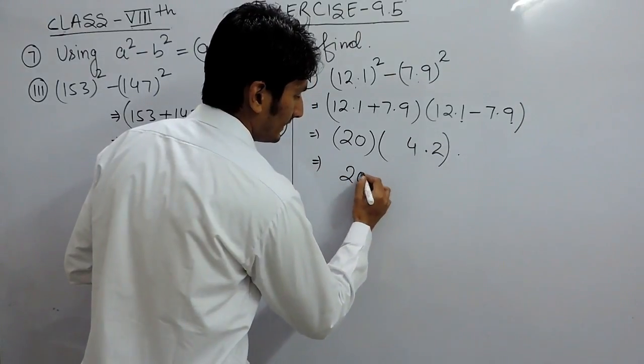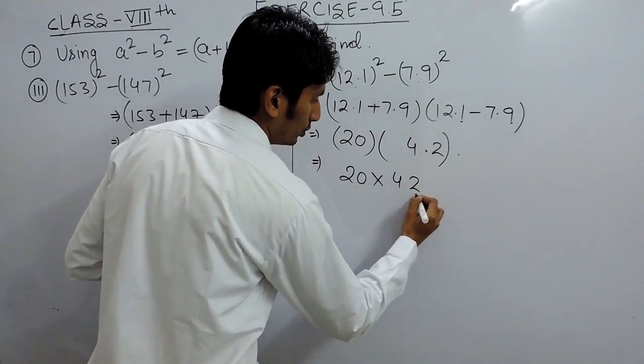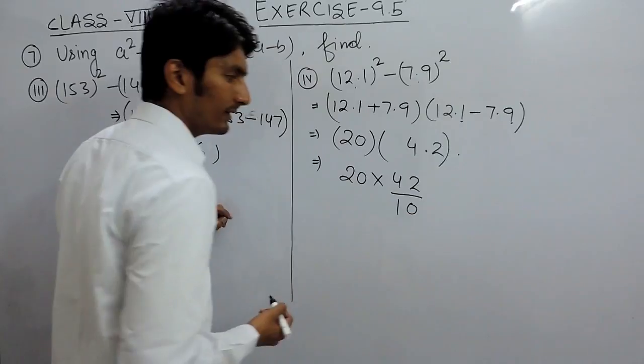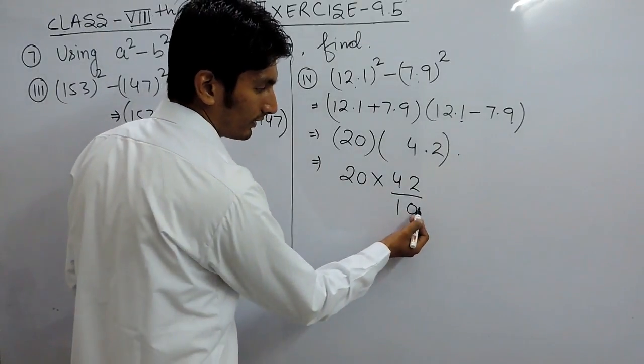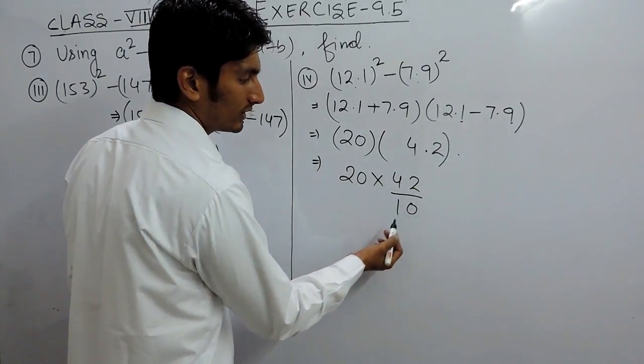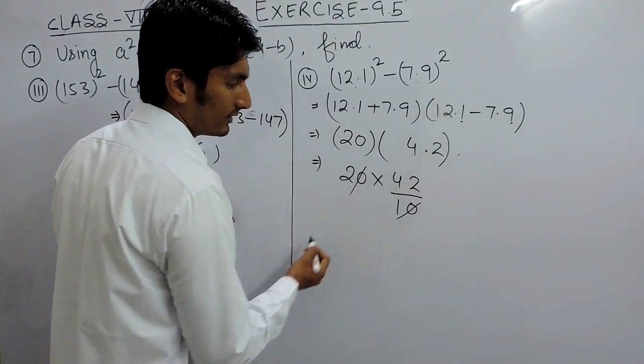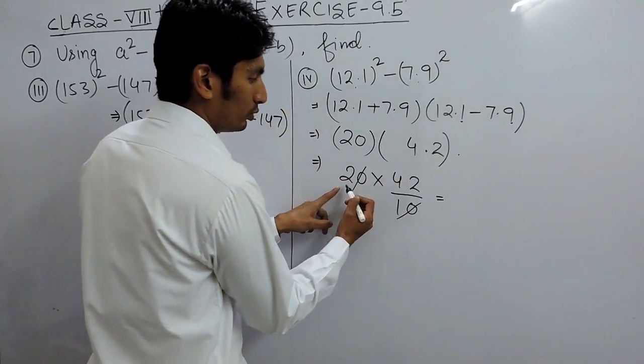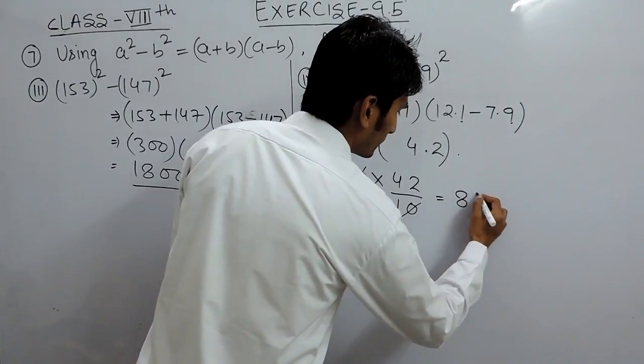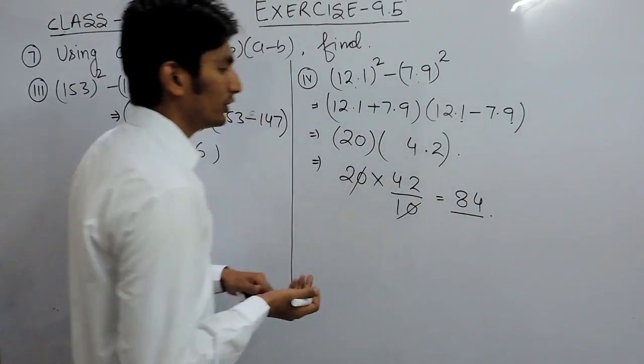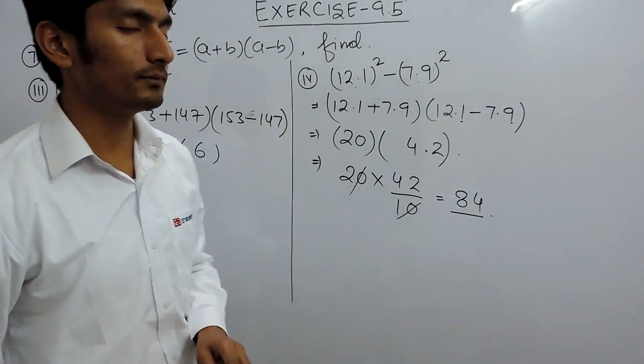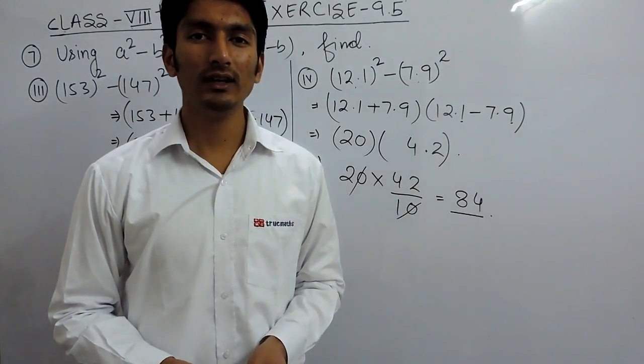If I multiply 20 with 4.2, I can remove the decimal and place 10 on the denominator. This can be cancelled down. And 42 times 2 is 84. So 84 should be the answer. This is how you can solve these questions.